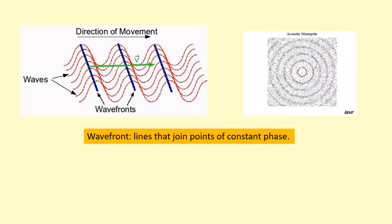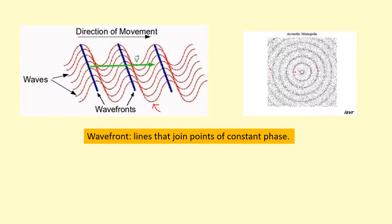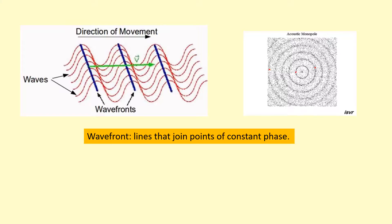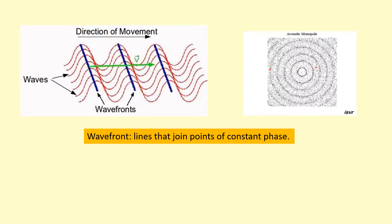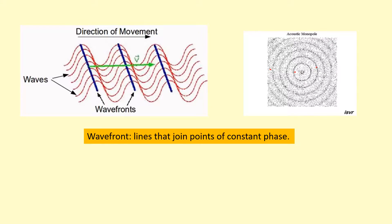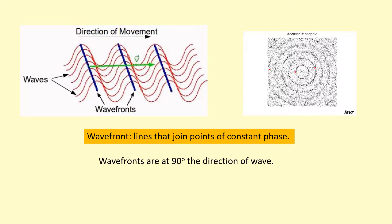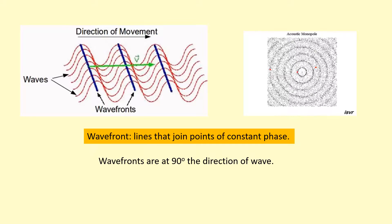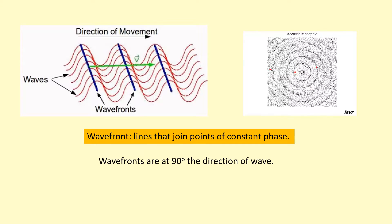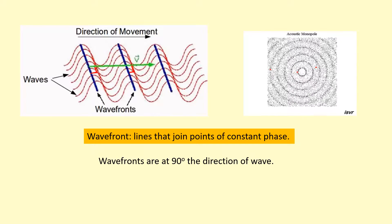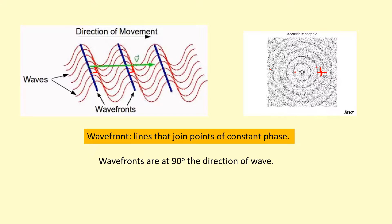But it doesn't have to be all the peaks. It could have been a line that joins all the troughs together. It's basically showing the distance between one point and the next, same point on the next wave. Also, another thing to keep in mind here is that the wavefronts are always at 90 degrees to the direction of the wave. So in this example of the wavefronts here, the wave is going that way.